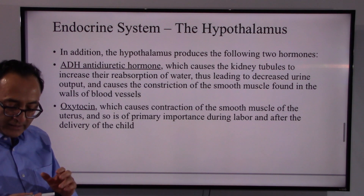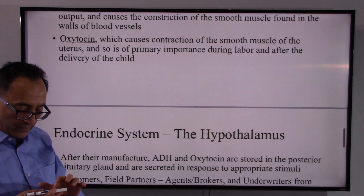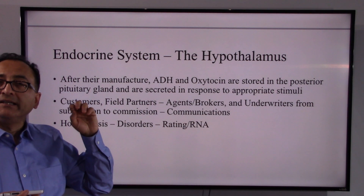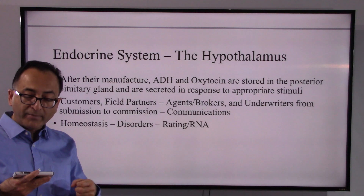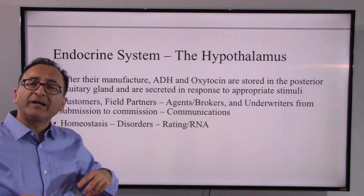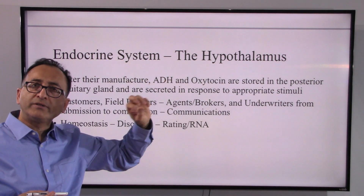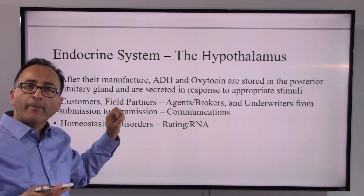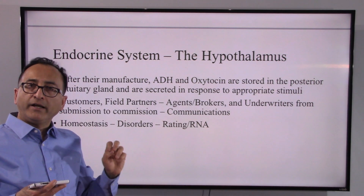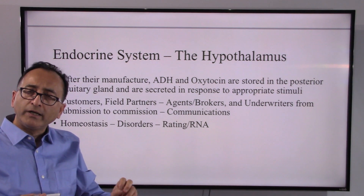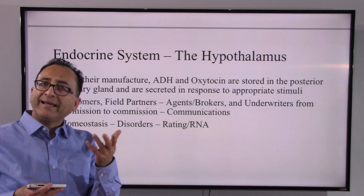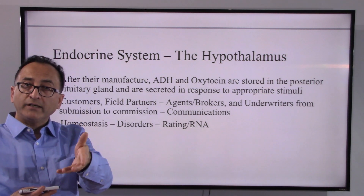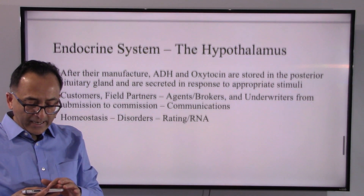ADH works with the adrenal and kidney together. To think of it simply: the hypothalamus and pituitary gland working together release certain hormones that reach and stimulate the thyroid, adrenal, pancreas, ovaries, and testicles.